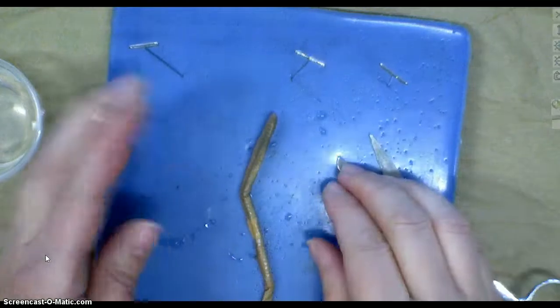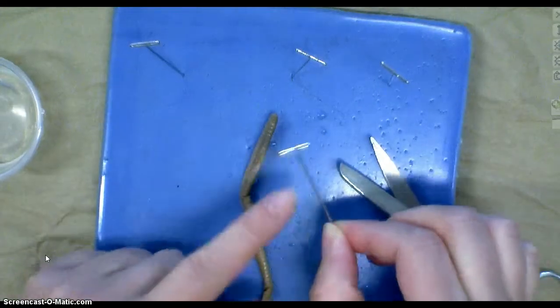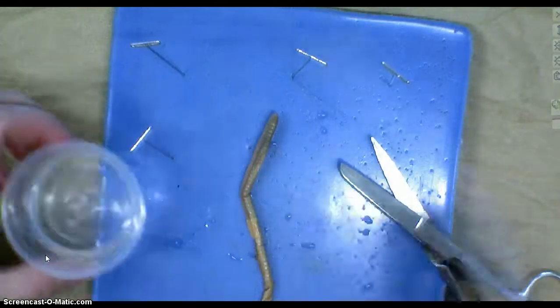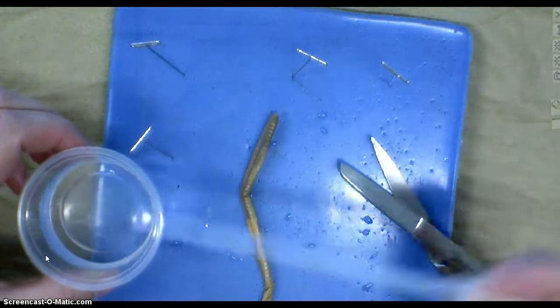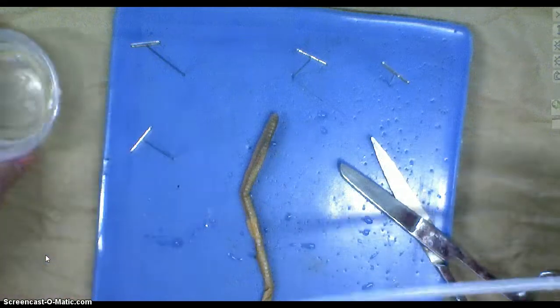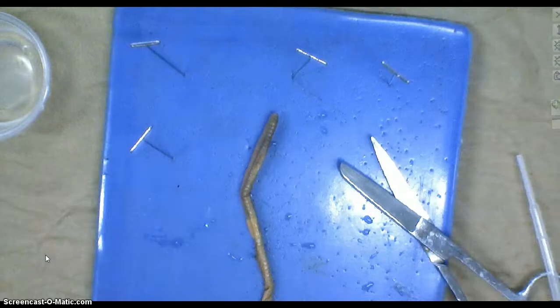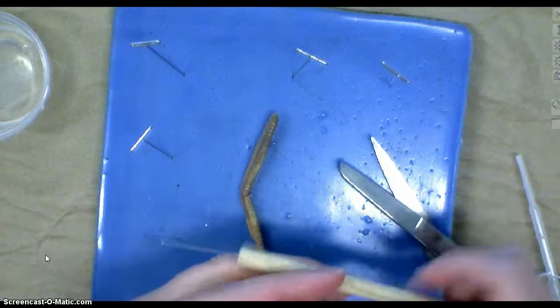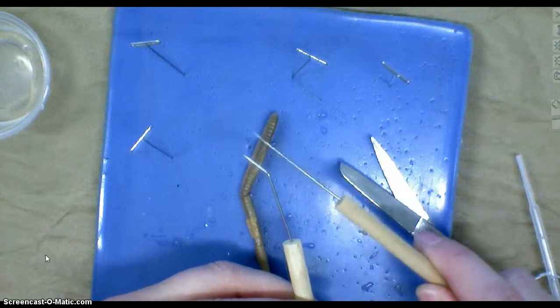Other things that we'll use will be these T-pins. You can see why they're called a T. We will use water because as the organism dries out, it will evaporate very quickly and it makes it easier to tear. We will also use probes. We have pointy ones, they're all pointy I guess, but this one's bent and this one's straight.